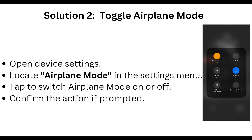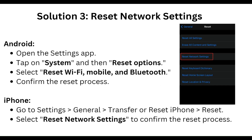Open your device settings and locate the airplane mode option in the settings menu. Tap the switch to toggle airplane mode on or off, and confirm the action if prompted. This is our second step. The third step is to reset network settings.